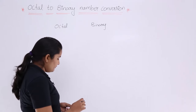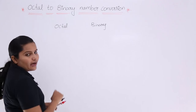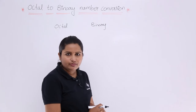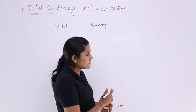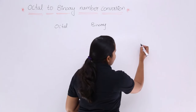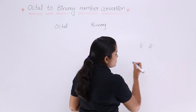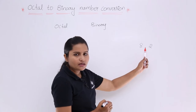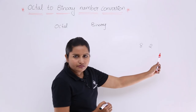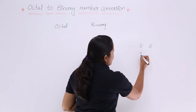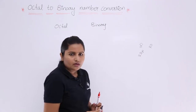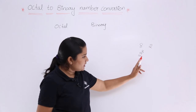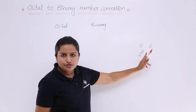To convert any octal to binary number you need to take the relation between the octal base and the binary base. The octal base is 8 and the binary base is 2. You can write the octal base in terms of binary as 2 cubed, so the relation between octal base and binary base is 2 cubed.